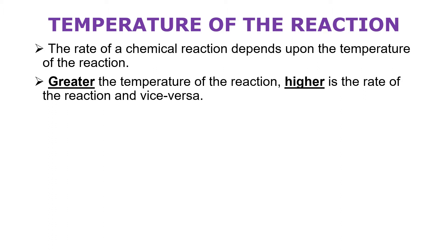For example, in your house, if you want to cook the food faster, what do you do? You increase the flame of the gas — you increase the temperature. If you increase the flame, the food will get cooked faster. And if you decrease the flame, the food will get cooked slowly. So similarly, if you increase the temperature, the rate and speed of the reaction will be more.